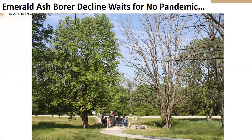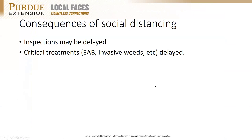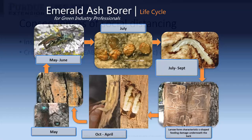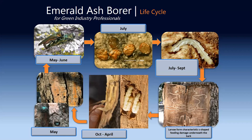Emerald ash borer decline waits for no pandemic. How do we keep the tree on the left alive — treated with emamectin benzoate — so it doesn't turn into the tree on the right? Inspections and critical treatments may be delayed. So let me talk about what we know about how treatments work by reviewing the life cycle of the emerald ash borer.